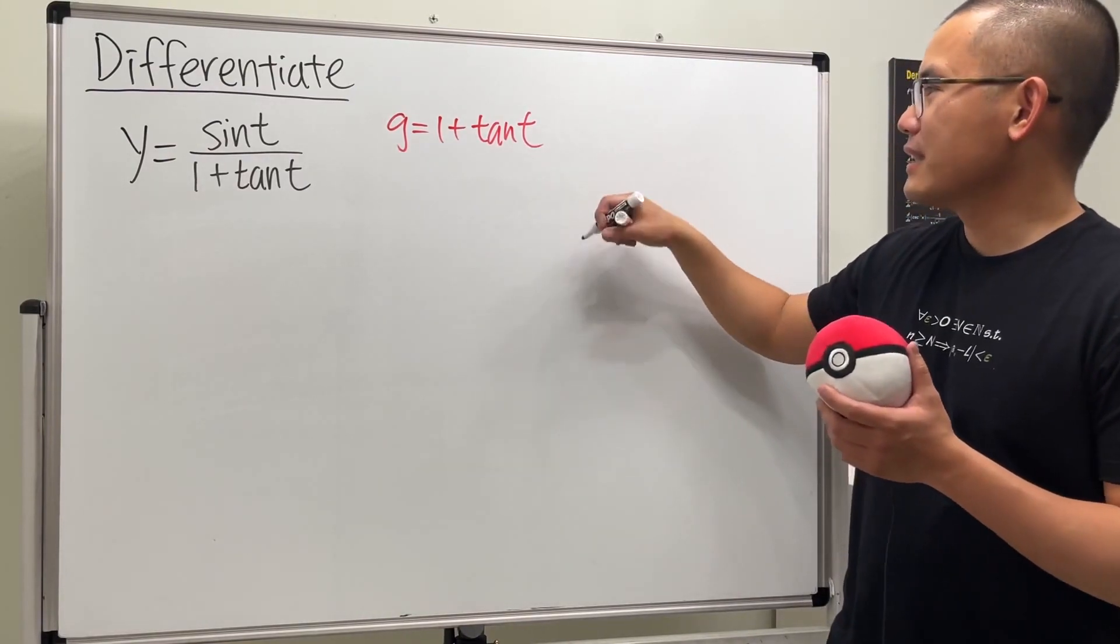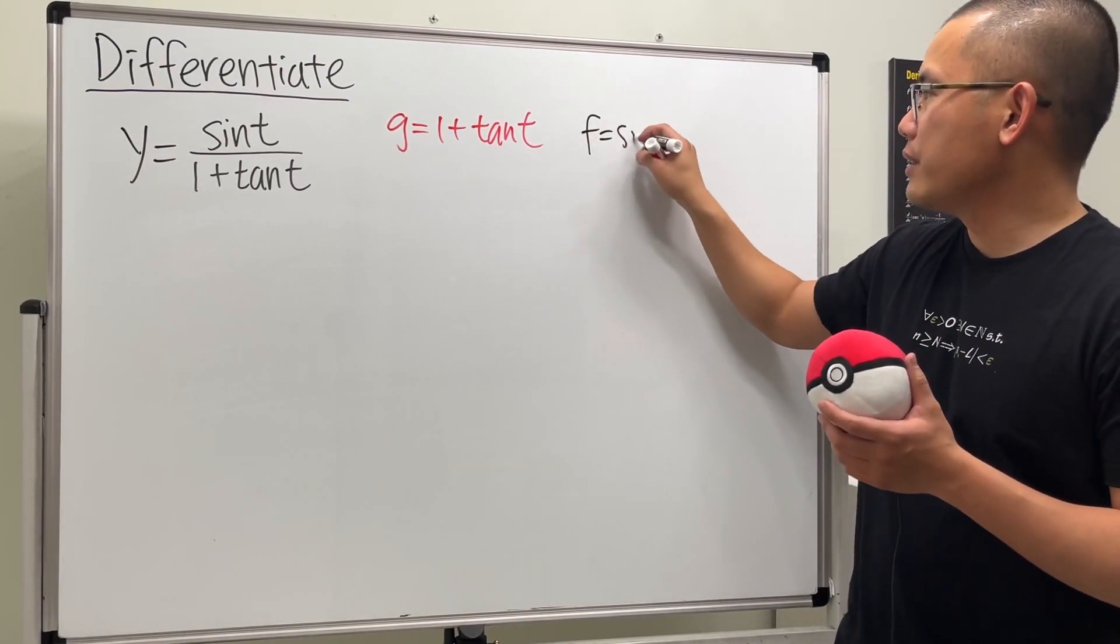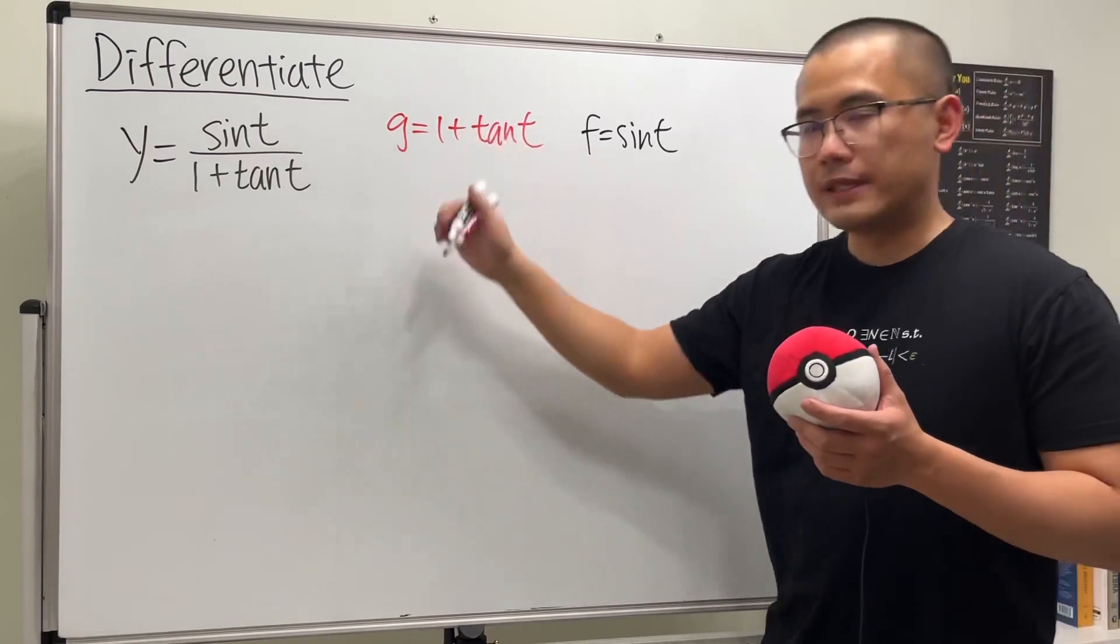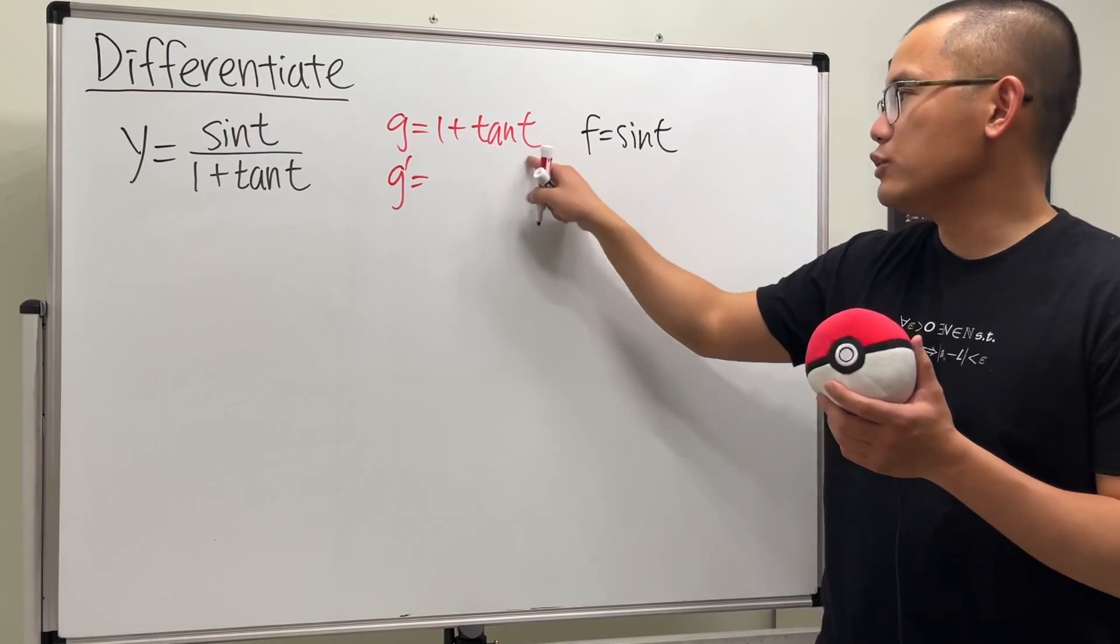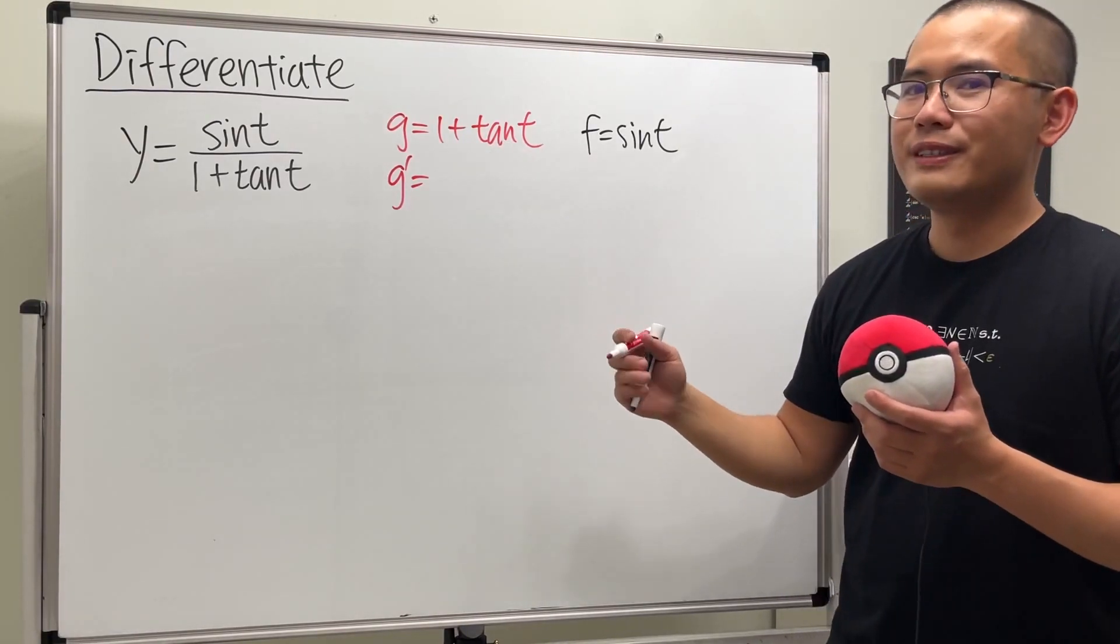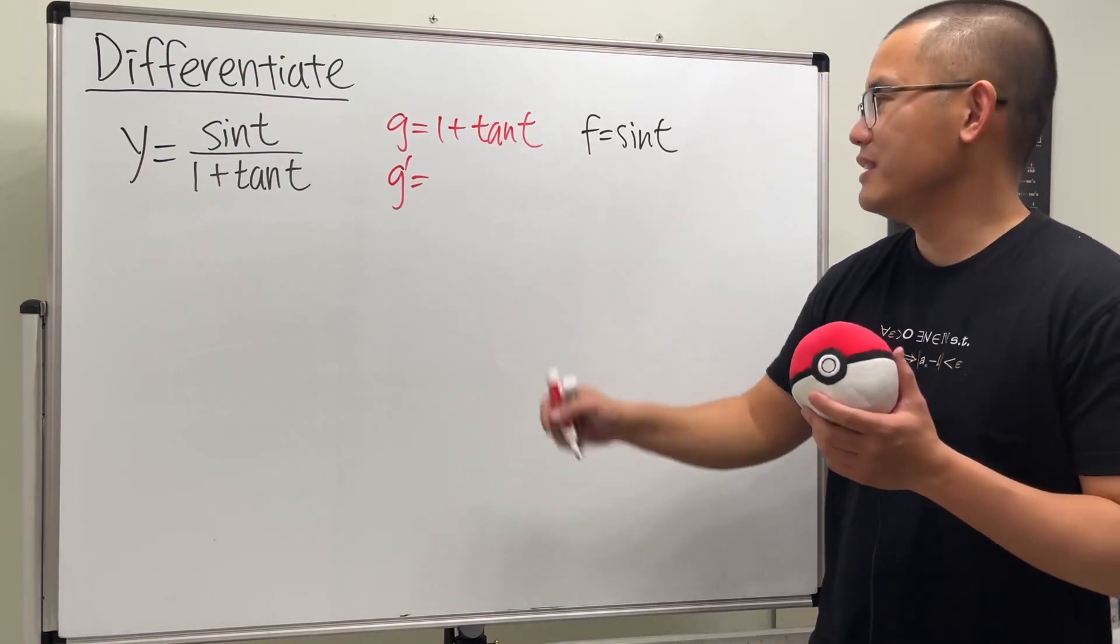And then on the top, we have the sine function, so let me write that down right here. Okay, let's go ahead, differentiate this. The derivative of 1 is just 0, the derivative of tangent t, what is it? Secant square t.